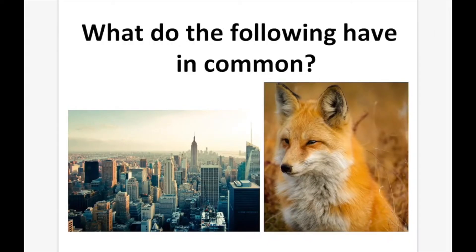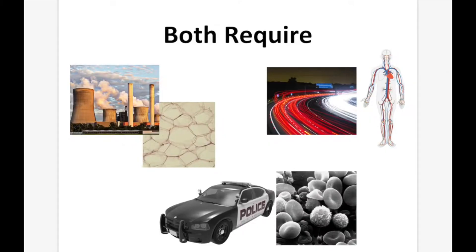So what do the following have in common? Pause the video and write down what a city and an animal have in common. Both our city and our living things require power — for a city, something like a power plant; for an animal, fat cells. Animals mobilize their fat cells, among other things, to create energy for the body.